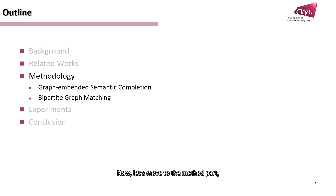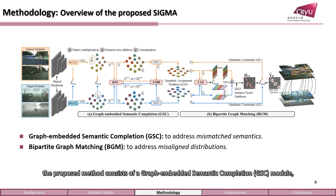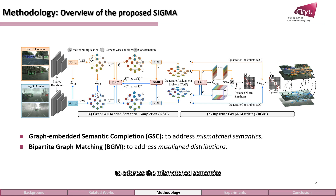Now let's move to the method part and present the implementation of our ideas. Generally speaking, the proposed method consists of a graph-embedded semantics completion module to address the mismatched semantics, and a bipartite graph matching module for fine-grained adaptation.